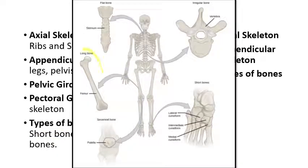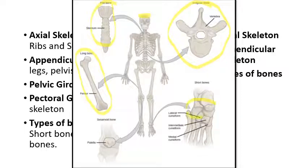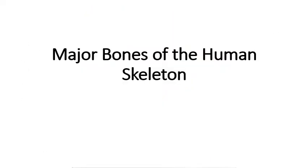The femur from the leg is a good example of a long bone. The sternum at the center of the chest is a good example of a flat bone, as are the skull bones. The spinal vertebrae are good examples of irregular bones. The carpals in the wrist and the tarsals in the ankles are roughly cuboid short bones. The kneecap — protecting the anterior surface of the knee — is called the patella and is the best example of a sesamoid bone.